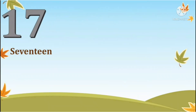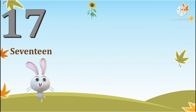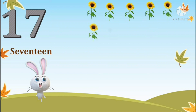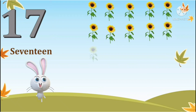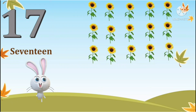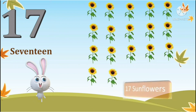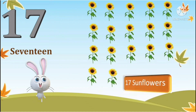Number 17. Let's count 17 sunflowers. 1, 2, 3, 4, 5, 6, 7, 8, 9, 10, 11, 12, 13, 14, 15, 16, 17. There are 17 sunflowers.